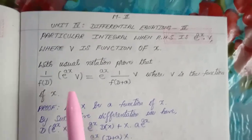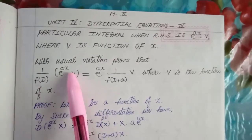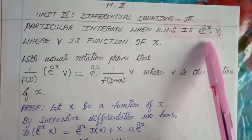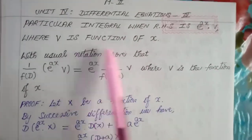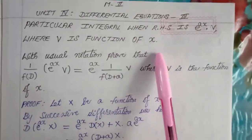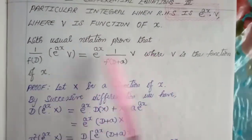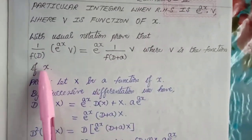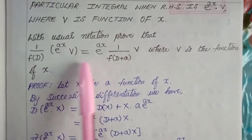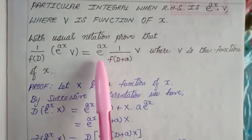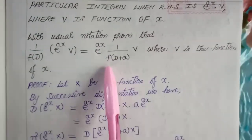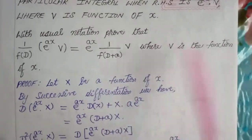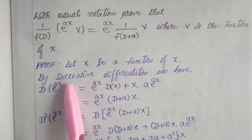Good morning dear students. Let us study particular integral when the RHS is of the form e^(ax) into v, where v is a function of x. So let's prove the theorem. With usual notation, prove that 1 by f of D into e^(ax) into v is equal to e^(ax) into 1 by f of D plus a into v, where v is a function of x.